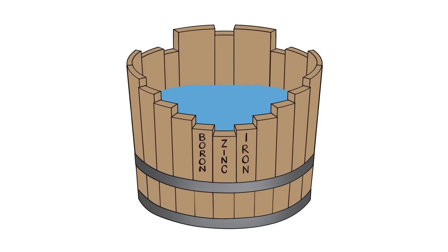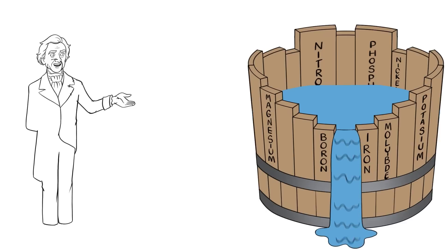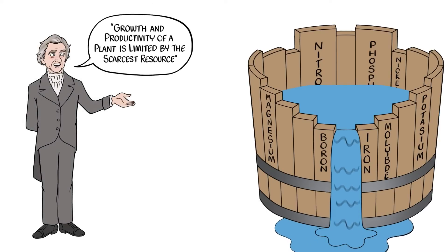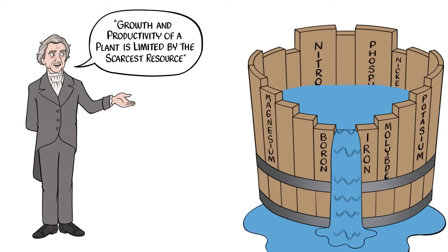In this analogy, the water level is your plant's yield potential. They may have enough nitrogen or phosphorus, but without enough manganese or boron and other micronutrients, the crop will be limited. This is known as Liebig's Law of the Minimum, which says that the growth and productivity of a plant is limited by the scarcest resource.